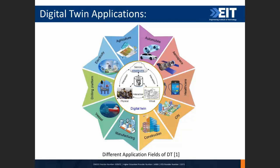Digital twin has a variety of applications — agriculture, automobile, aerospace, healthcare, city planning, construction, drilling platforms, electricity, vessels. We're mainly focusing on manufacturing. Manufacturing is a huge field — not just mechanical manufacturing. Everything you see around you is manufactured somewhere. Electrical, mechanical, civil — all these industries need manufactured parts.